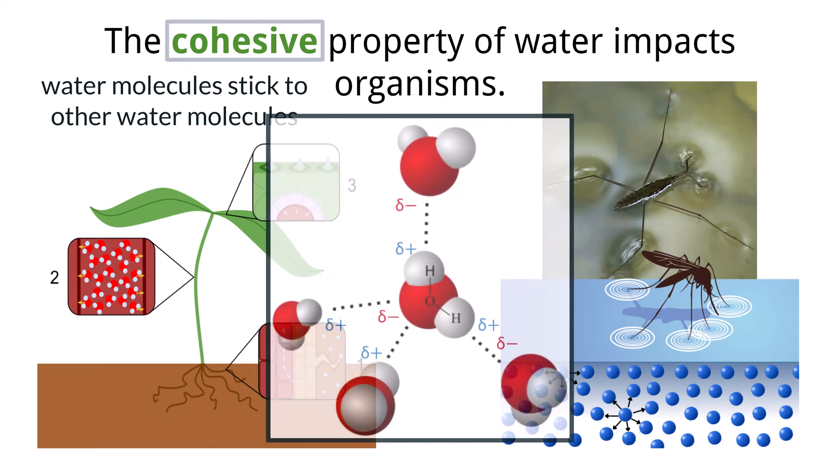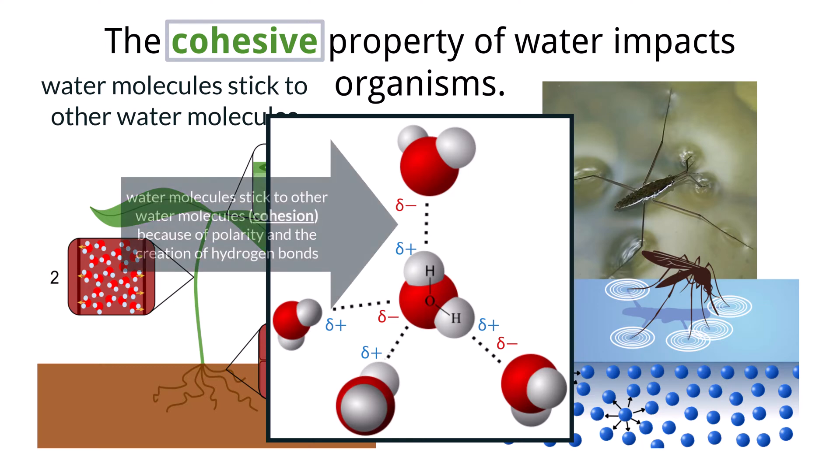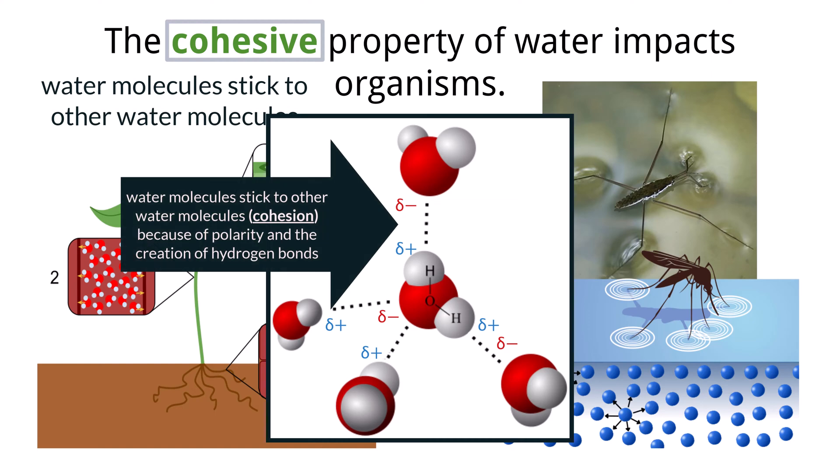Cohesion, which describes the ability of water molecules to attract and stick to other water molecules, is the first important property. As we can see in this image, this is mainly due to the polarity of each water molecule and the formation of hydrogen bonds. These negative and positive charges keep the water molecules together, making them more difficult to pull apart compared to molecules of some other liquids.